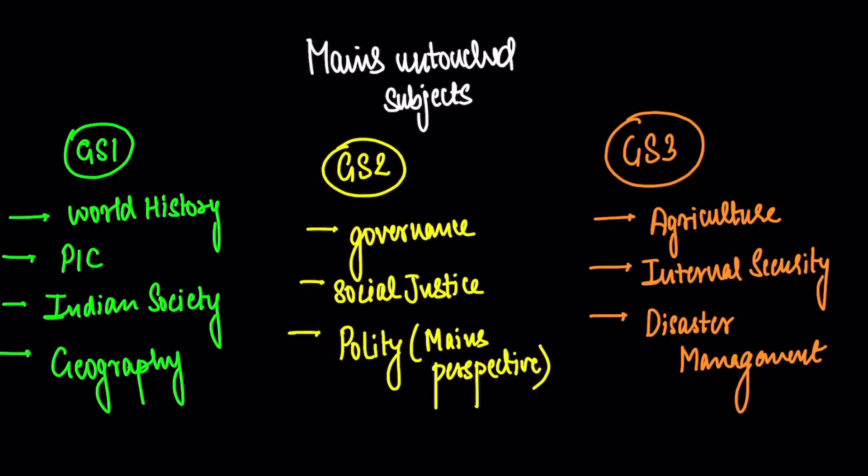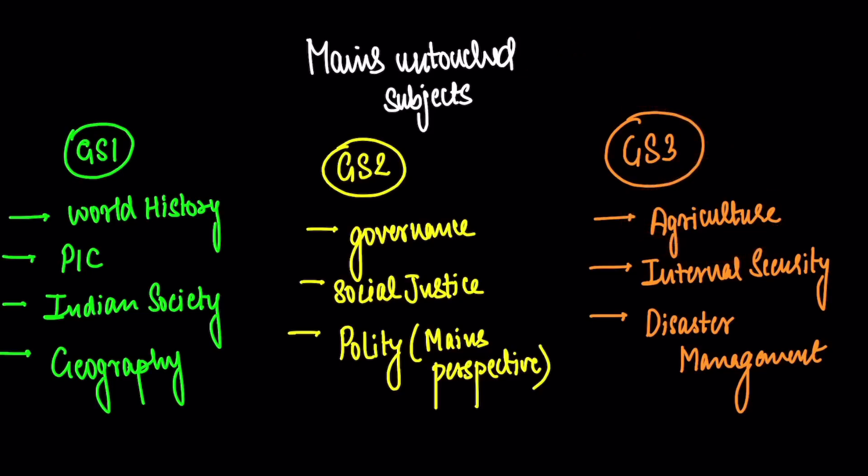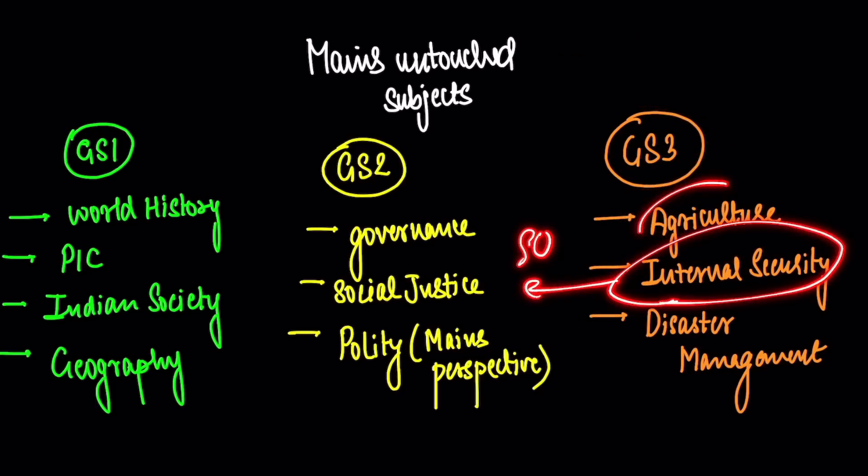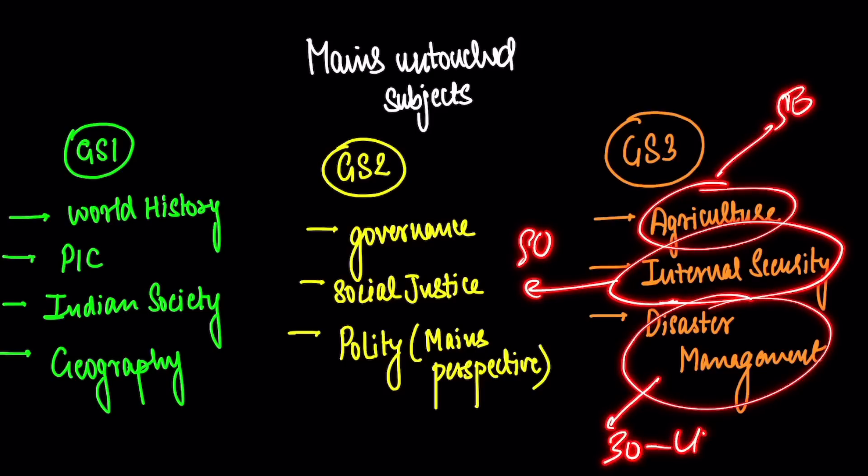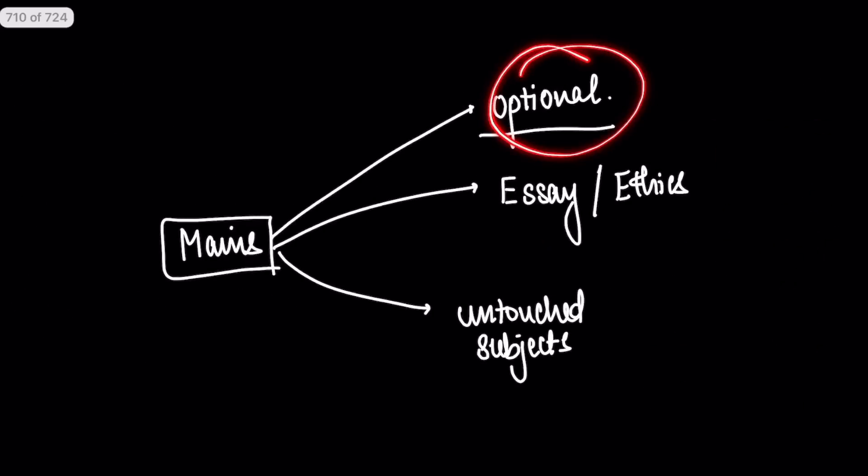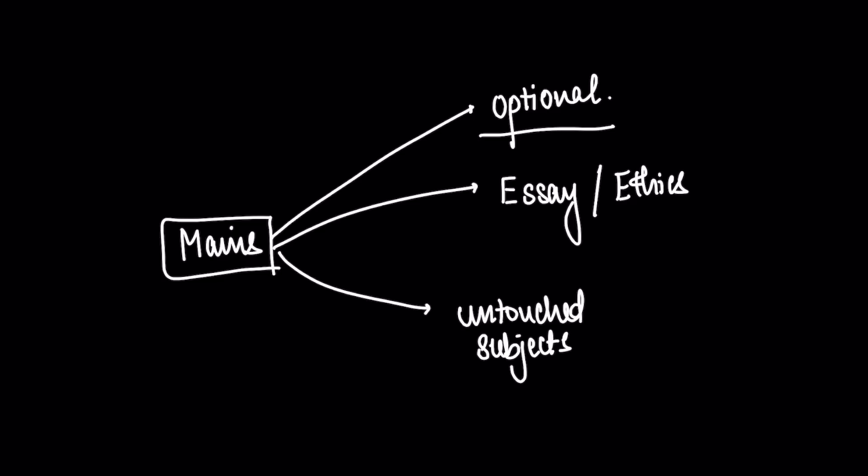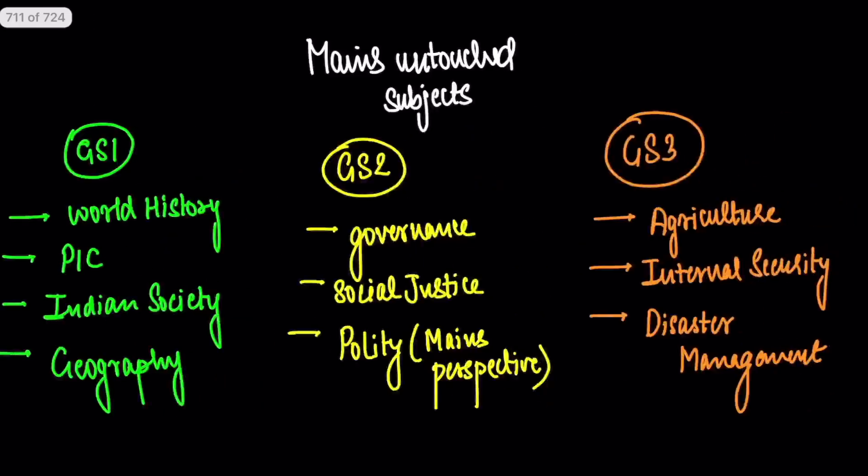Then in GS3, there's agriculture. The perspective about public distribution system, things about food processing and its scope and significance, key technology in the aid of farmers - we don't do these things. Then internal security is 50 marks. These are also 50 marks in mains. Disaster management - every year there are 2 or 3 questions, so 30 to 40 marks. These are the subjects that we haven't touched yet, and we have to do all of this in the next six months, along with our optional and along with at least one of essay and ethics. So you don't have time. You need to invest a lot of time going forward into your mains preparation.